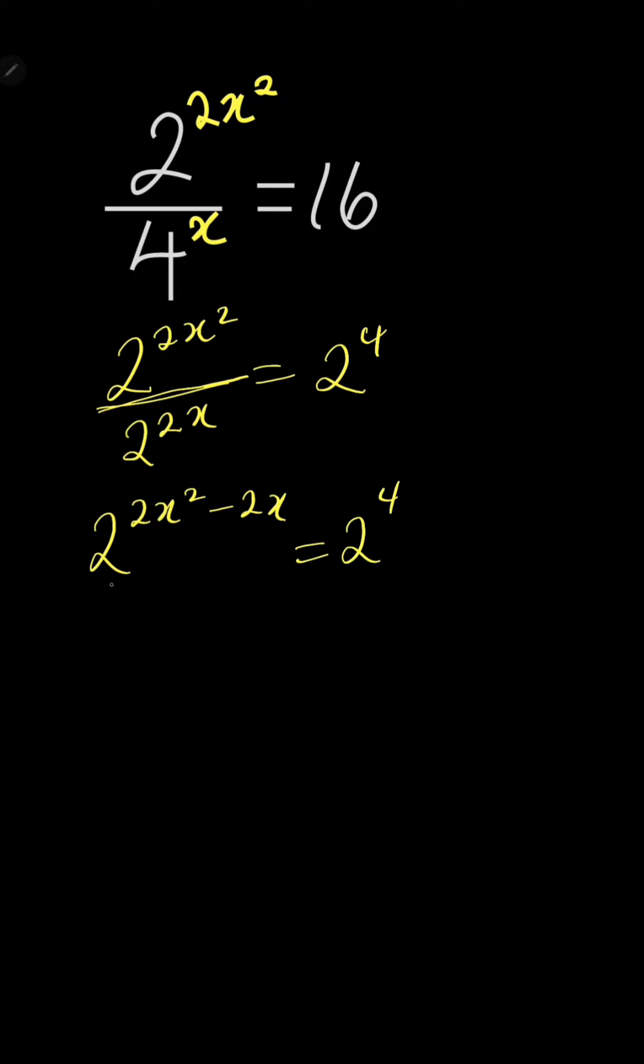Now you can see that the bases are the same, so the powers should be the same. Therefore, 2x squared minus 2x equals 4, or 2x squared minus 2x minus 4 equals 0.